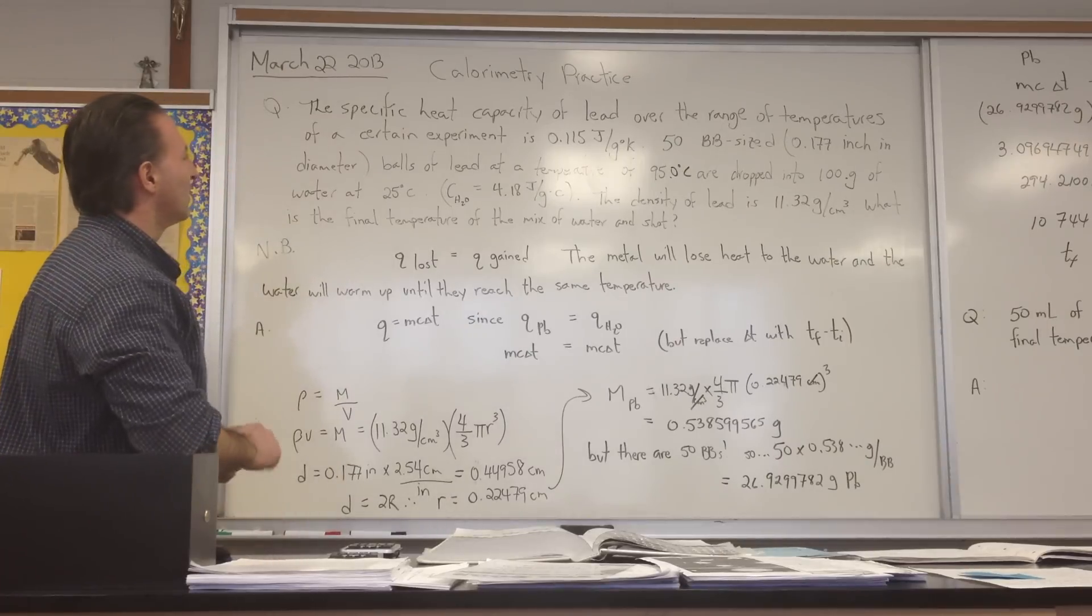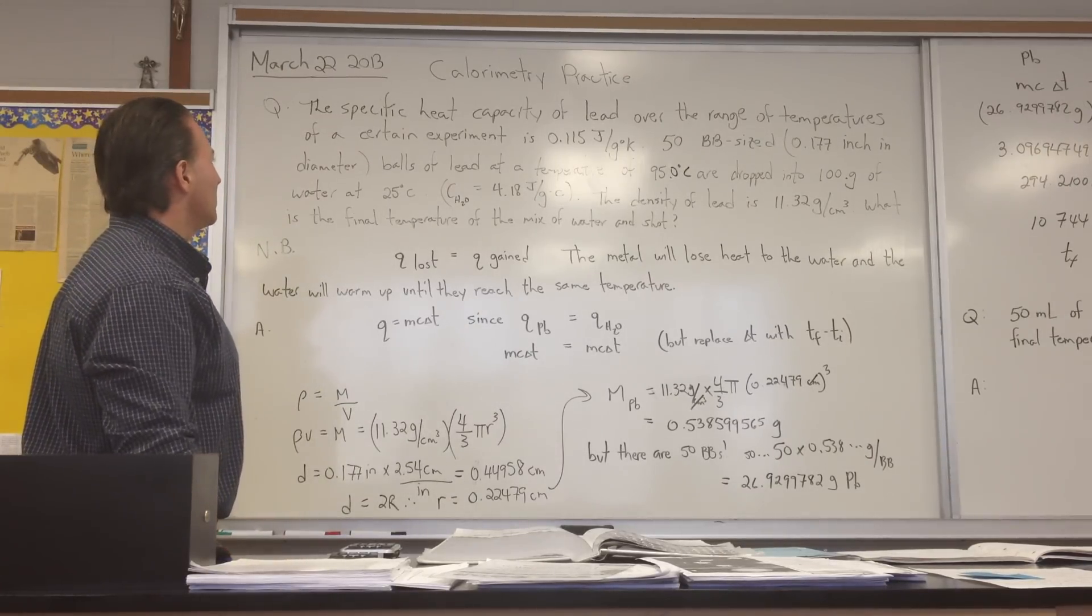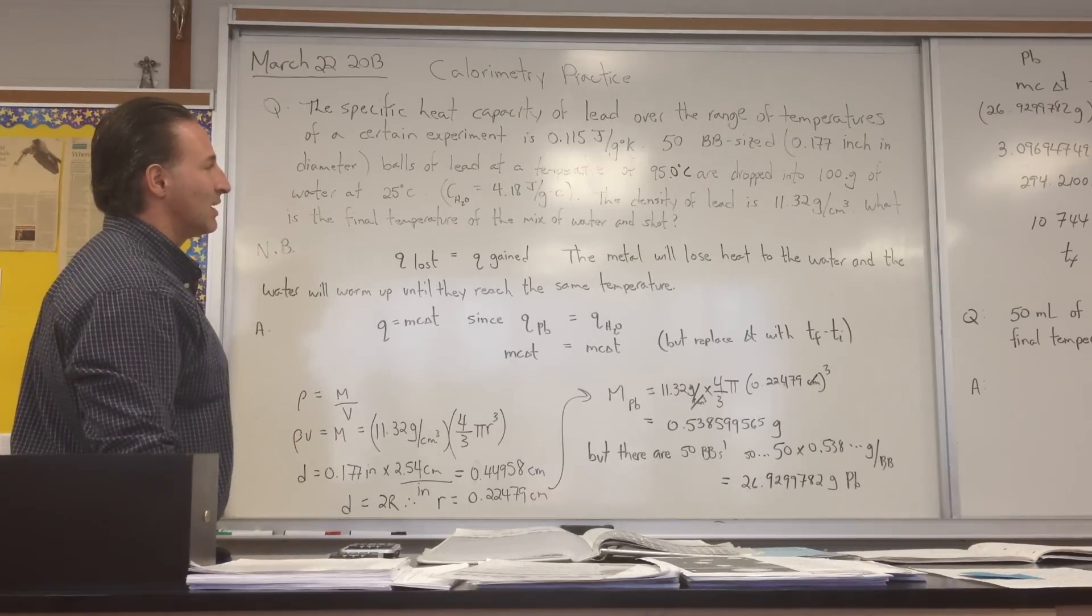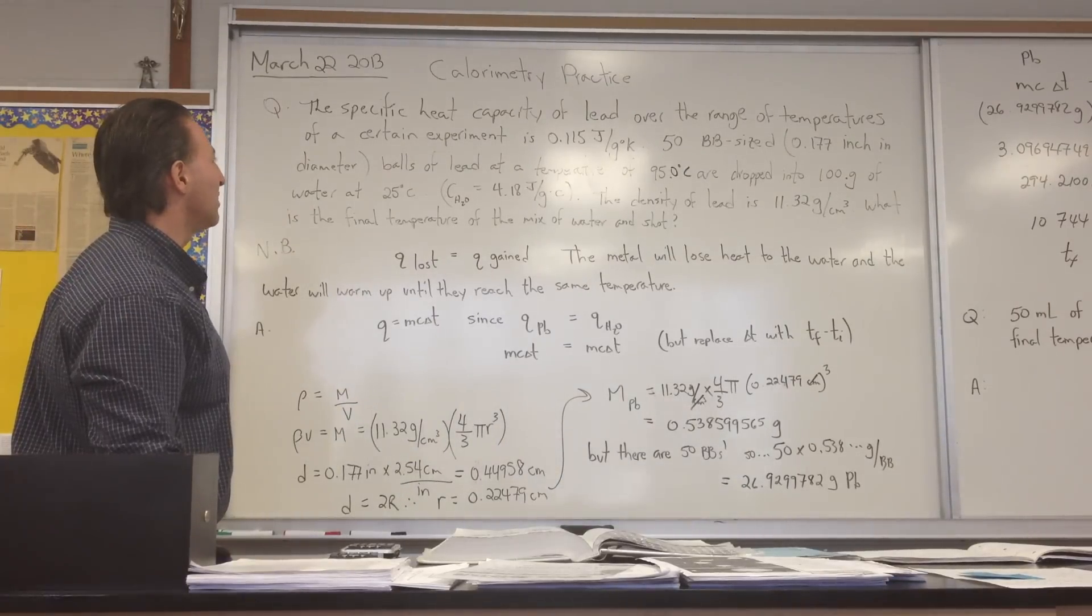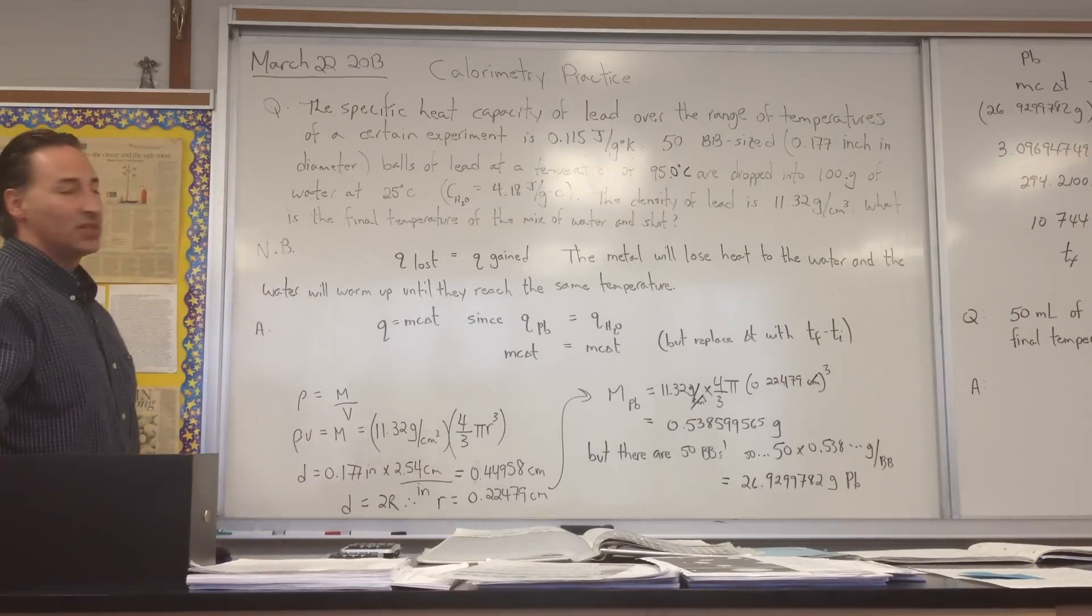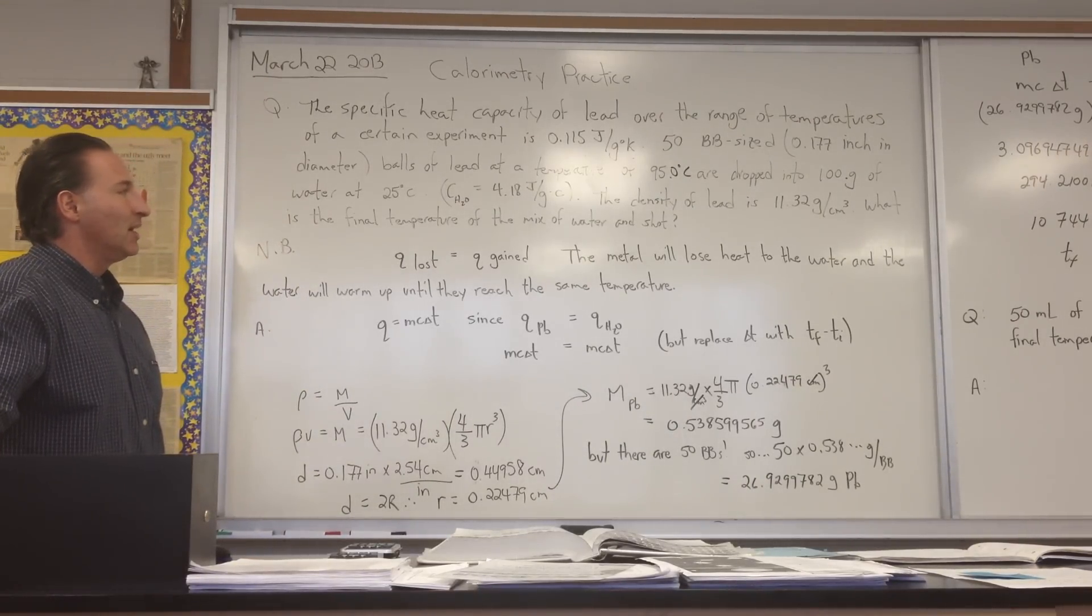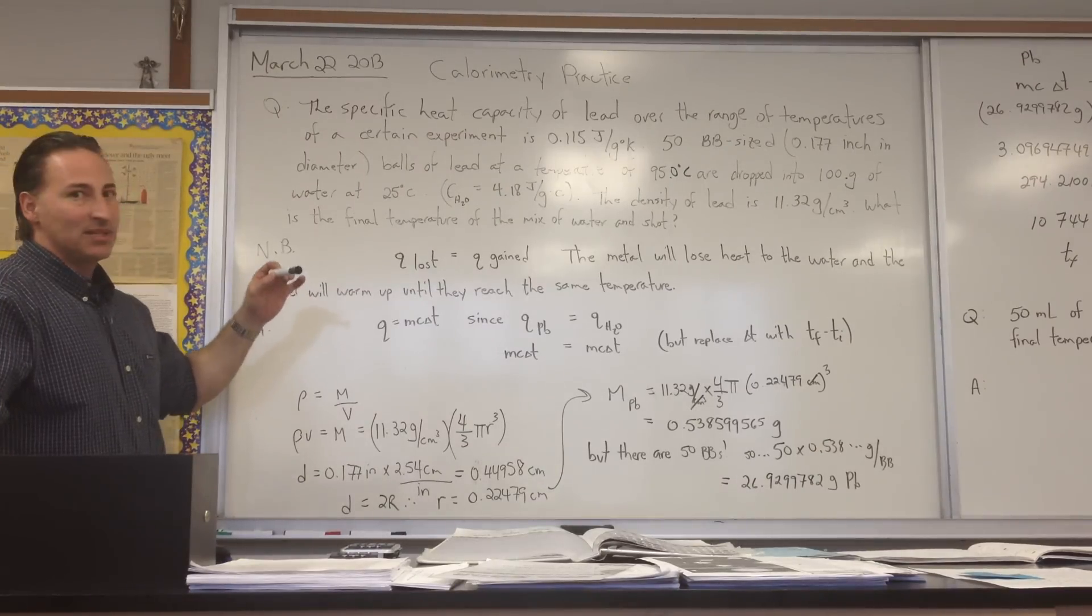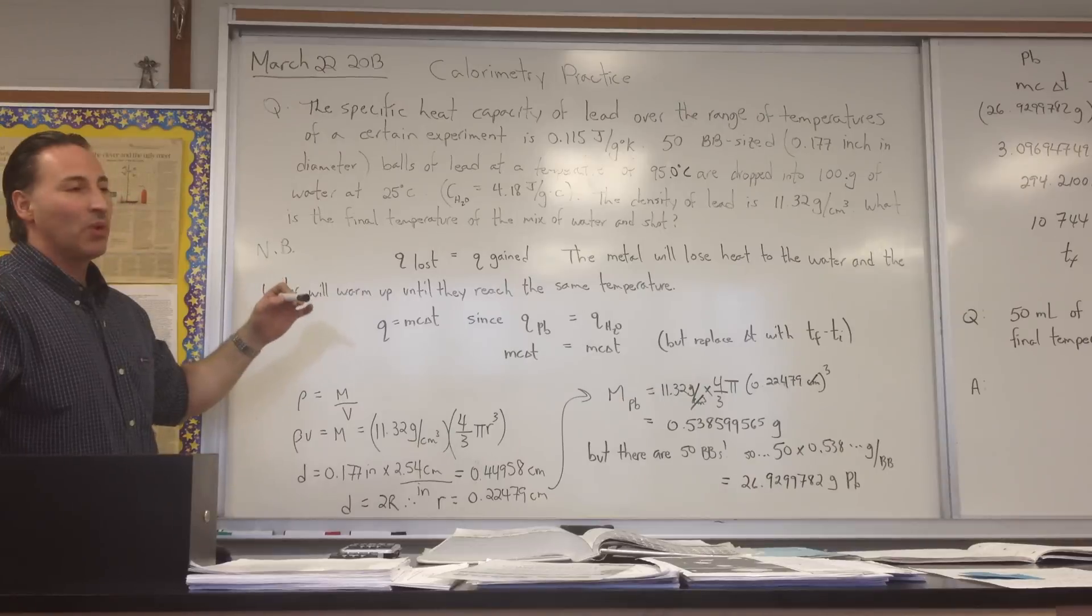Okay, so this calorimetry practice problem is asking, what is the specific—oh sorry, it starts off by giving you the specific heat capacity of lead and water. So the specific heat capacity of lead over the range of temperatures of a certain experiment is 0.115 joules per gram degree Kelvin, meaning that for every gram of lead being raised one degree in temperature, we have to input 0.115 joules.